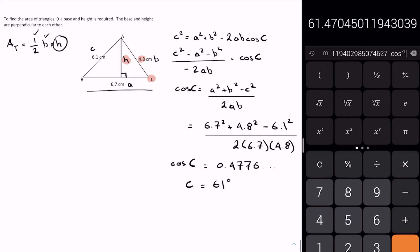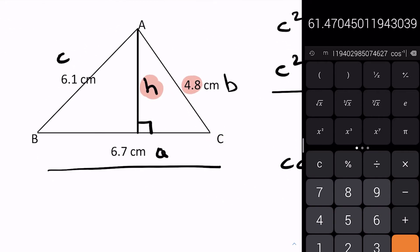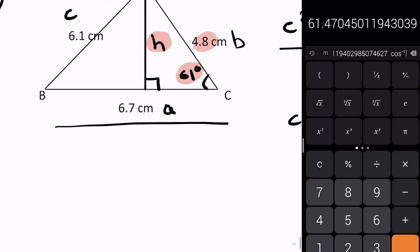So we have angle C, it's 61 degrees. Let's zoom in here. So I have this here, this is 61 degrees, and I can solve now using SOHCAHTOA, angle opposite hypotenuse.